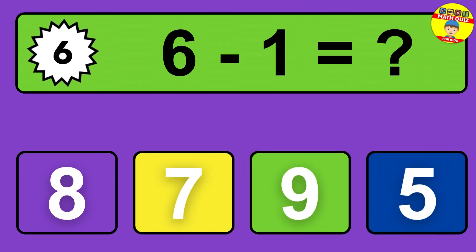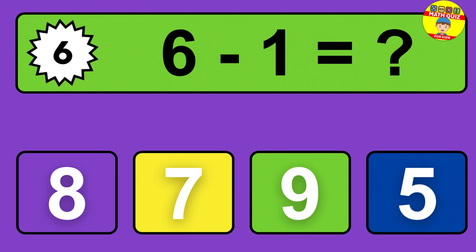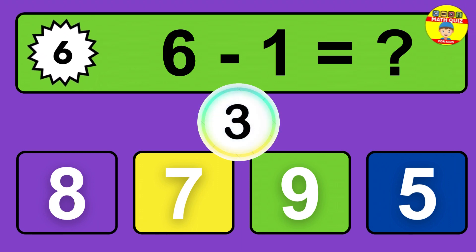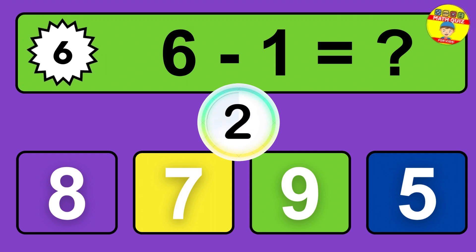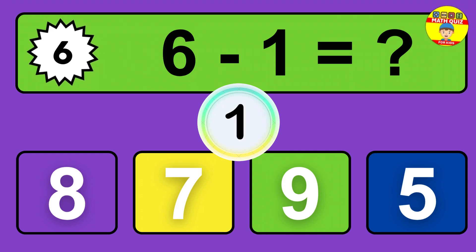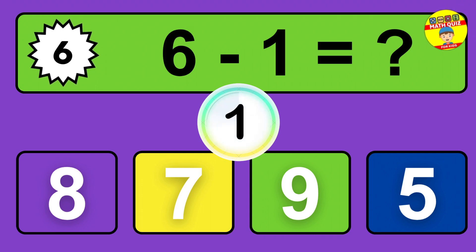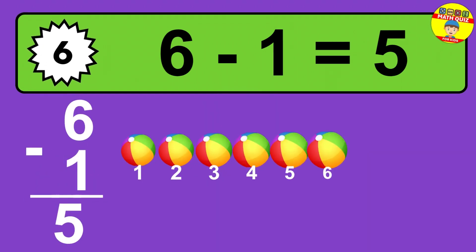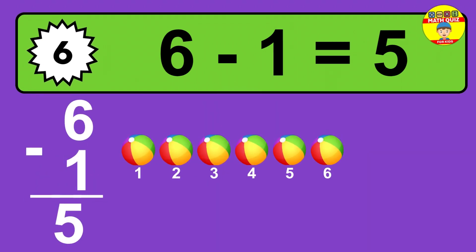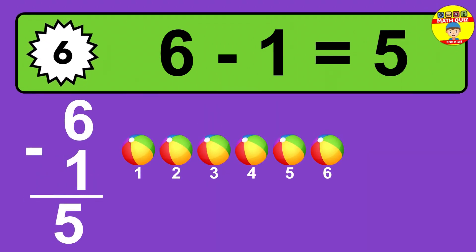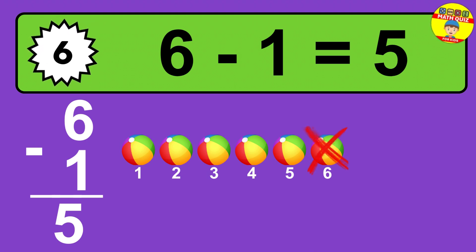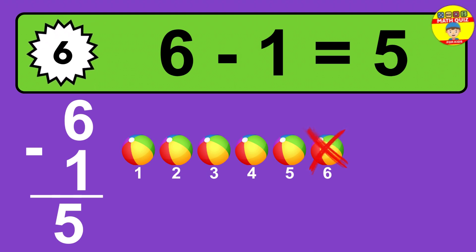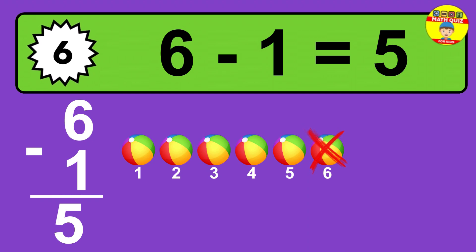Question six: six minus one equals what? The answer is six minus one is five. Let's count it: one, two, three, four, five.